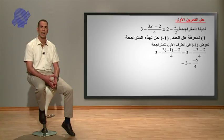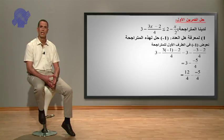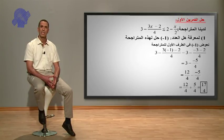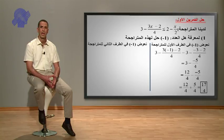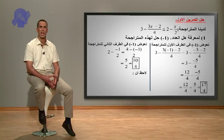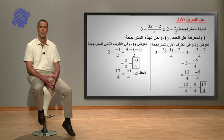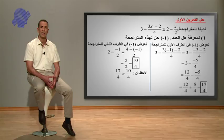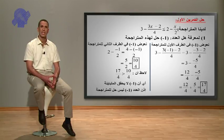بعد تبسيط نتحصل على 3 ناقص 5 على أربعة، نقوم بتوحيد المقامات لتصبح 12 على أربعة ناقص 5 على أربعة، نحتفظ بالمقام الموحد ونجمع البسطين، نتحصل على 17 على أربعة. نقوم بتعويض ناقص 1 في الطرف الثاني: 2 ناقص 1 على 2، بعد توحيد المقامات نتحصل على 5 على 2 وتصبح 10 على 4. نتيجة الطرف الأول 17 على أربعة أكبر من نتيجة الطرف الثاني 10 على أربعة، إذن ناقص 1 لا يحقق المتباينة وليس حلاً.